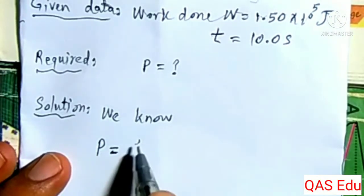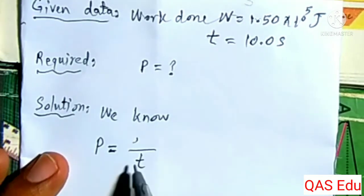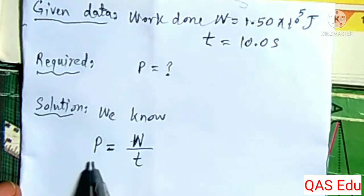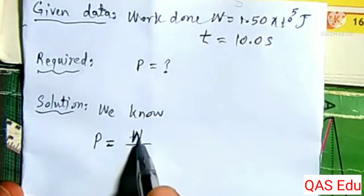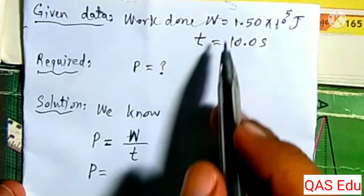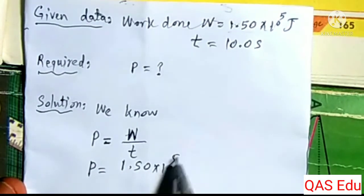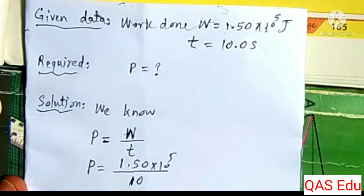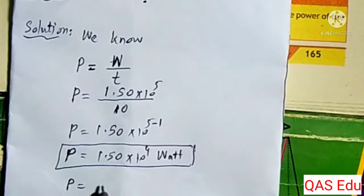Power is defined as the rate of doing work divided by time. To calculate: 1.50 times 10 to the power of 5 joules divided by time of 10 seconds, giving the power of the crane.